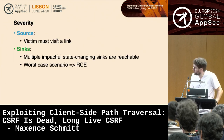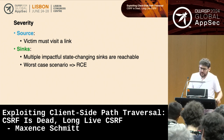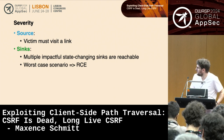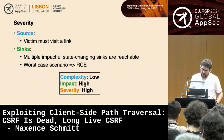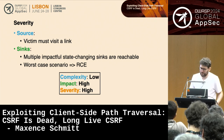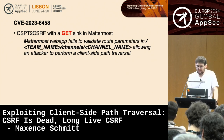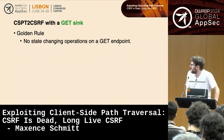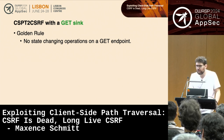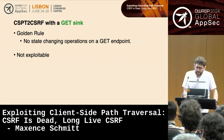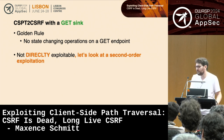Regarding severity: the victim only needs to visit the link — there's no additional interaction like clicking a button as in Rocket Chat. We were able to reach multiple impactful endpoints, and the worst-case scenario is remote code execution. This can be considered high severity. The last example exploits a GET sink. Normally nothing should happen because the rule is: do not make state-changing operations on GET endpoints, and Mattermost was following this rule.